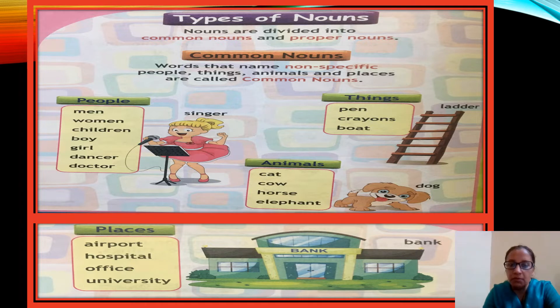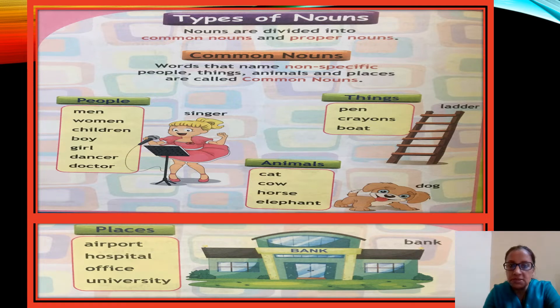So first let's know about common noun. What is a common noun? Words that name non-specific people, things, animals and places are called common nouns.